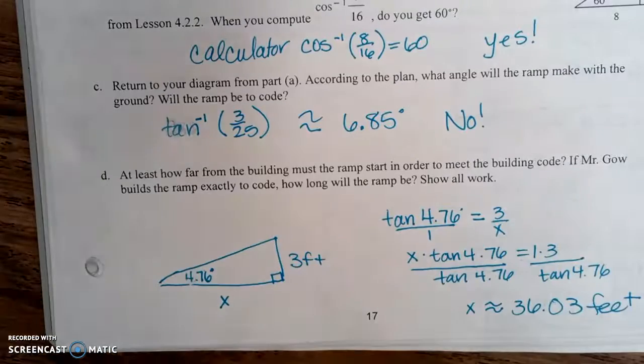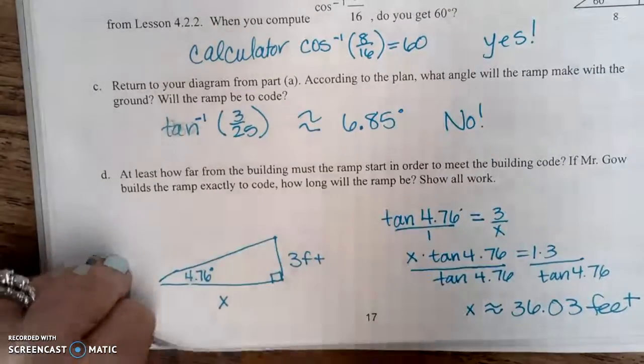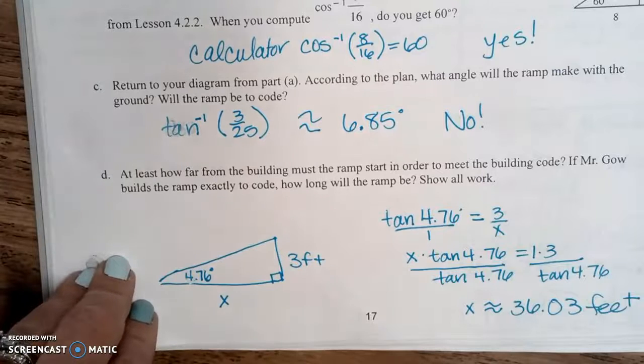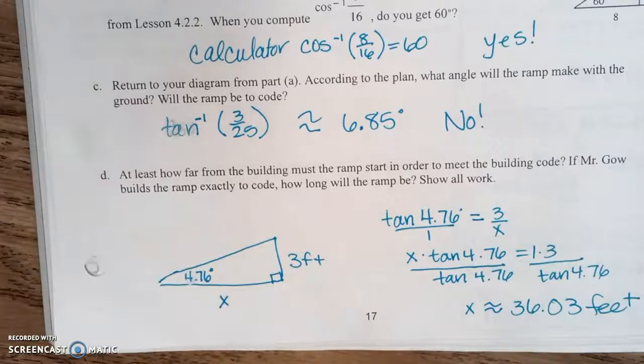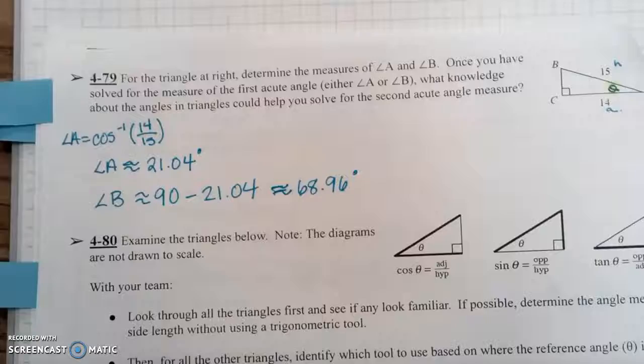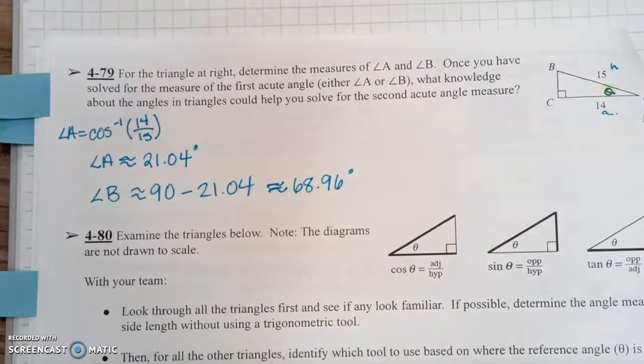Any questions on part D there? Anybody still writing? Okay, flip over to the top of page 18. Top of page 18 is question 79. It says, for the triangle at right, determine the measures of angle A and angle B. Once you have solved for the measure of the first acute angle, and you can pick A or B, what knowledge about the angles in triangles could help you to solve for the second acute angle measure?